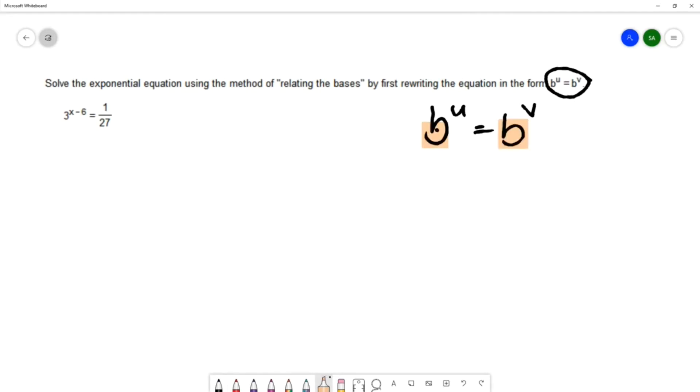And when the base on each side is the same, we can use a property of exponential functions, the one-to-one property. This is a property that we discussed in previous chapters.